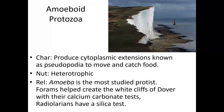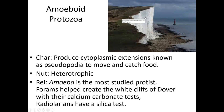Another group that fits into the amoeboid protozoans is foraminiferans. We actually have fossils of them around here — if you've ever been towards Lake Whitney, there's a big white cliff there made up of the dead shells of foraminiferans that used to live a long time ago. These are similar to the white cliffs of Dover — that cliff is white because their shell is made out of calcium carbonate, which is essentially chalk. So these are chalk cliffs made from the fossils of foraminiferans.